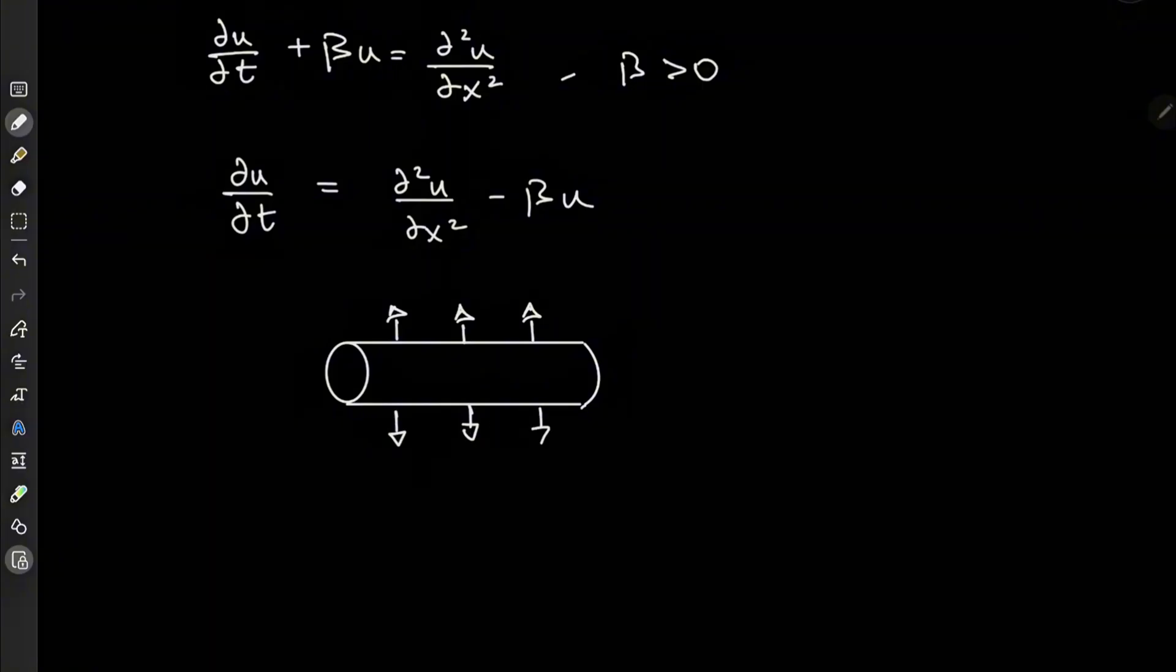And just for the purpose of this problem, to make our lives easier, I'm going to assume some really straightforward boundary conditions. So let's say that the ends of the rod, u of 0 at any time t, and u of l at any time t, are both maintained at 0 temperature.